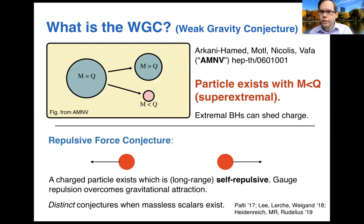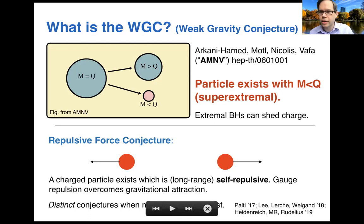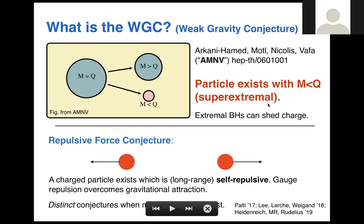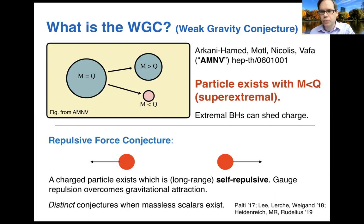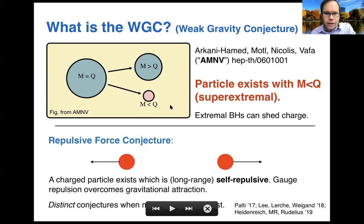Saying that there are no global symmetries by itself is not very useful, because it says there are no exact global symmetries — but we know that in the standard model in the real world, we have lots of approximate symmetries. Things like why the pion is light compared to other bound states in QCD depends on having approximate global symmetries. What you'd really like to know is not just whether there can be global symmetries, but if there cannot be, how close can we get? That's what motivated the weak gravity conjecture, which asks what happens if I have a very weakly coupled gauge theory — approaching a global symmetry by dialing down the gauge coupling to be very small.